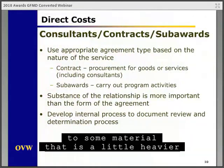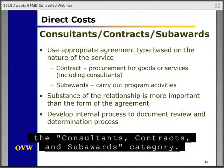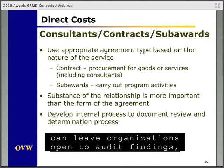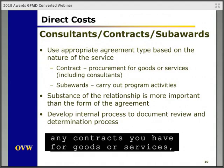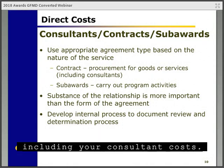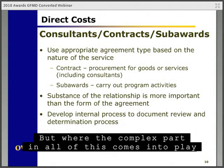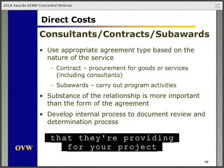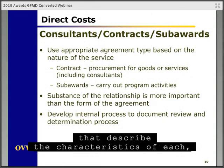We're going to move on to some material that is a little heavier as we go through the consultants, contracts, and subawards category. This part of the training is more complex, but when not followed properly, can leave organizations open to audit findings. This category is where you'll budget any contracts you have for goods or services, including your consultant costs. Also here is where you'll include any subawards that you issue, like you would with your MOU partners.